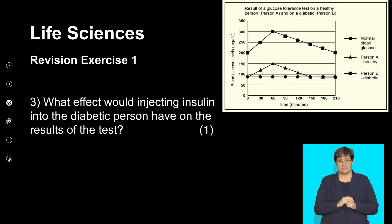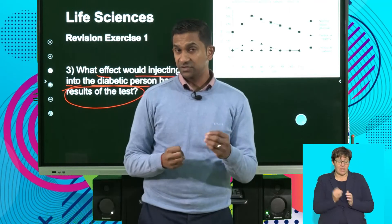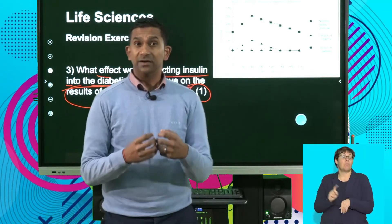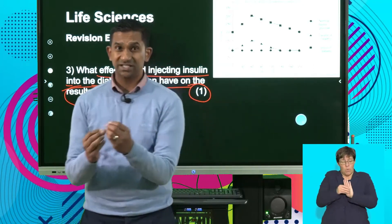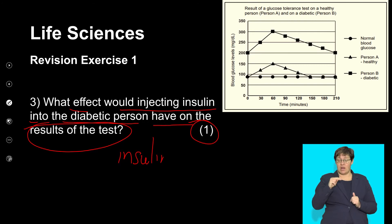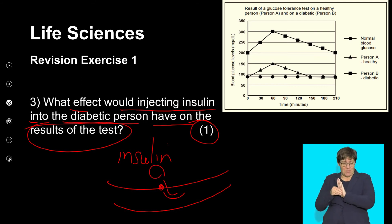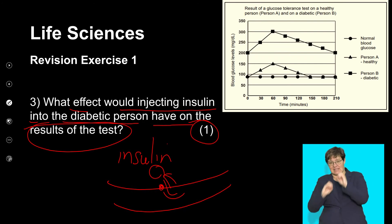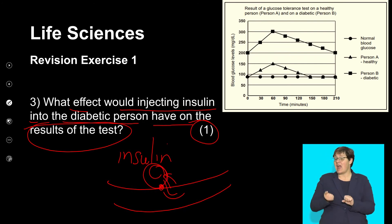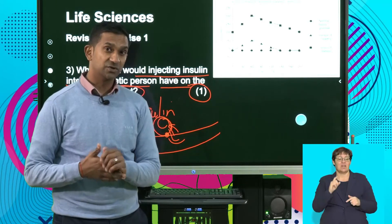Question 3: What effect would injecting insulin into the diabetic person have on the results of the test? Remember that a diabetic individual has a problem with being able to absorb blood glucose into the cells. We do know that insulin as a hormone will assist the individual — allowing the cells to open up so that glucose can move from blood vessels into the cells. It will reduce the amount of blood glucose in the blood vessels, therefore decreasing glucose levels in the bloodstream.